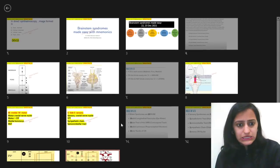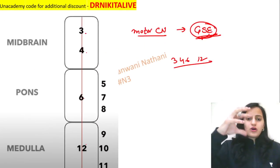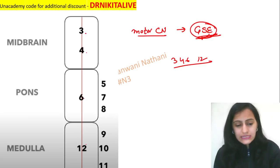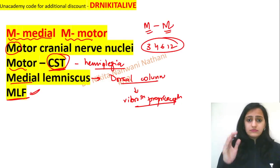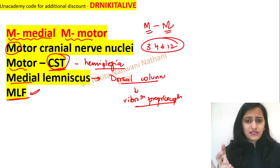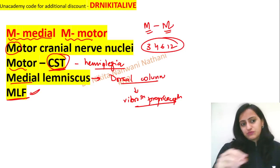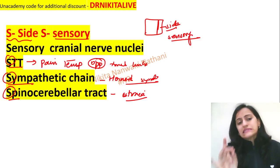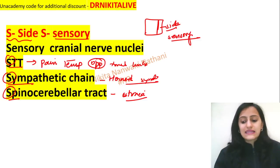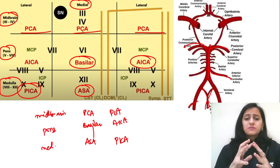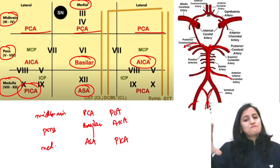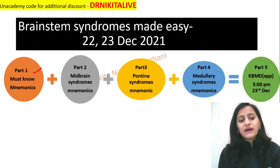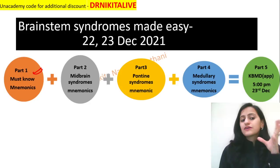To summarize what we learned: the rule of four — four CNs above the pons, four from the pons, four below. CNs 3, 4, 6, and 12 are medial and affected in medial brainstem syndromes. The M-for-M mnemonic: medial means motor — corticospinal tract, MLF, and medial lemniscus carrying vibration and proprioception are affected. Laterally, S for side and sensory: spinothalamic tract for pain and temperature, sympathetic chain, and spinocerebellar tract are affected. Arteries: vertebral branches for medulla, basilar and AICA for pons, and PCA for midbrain.